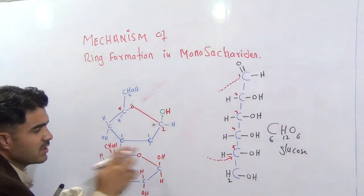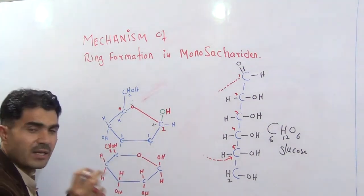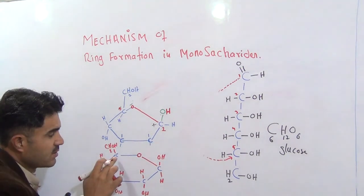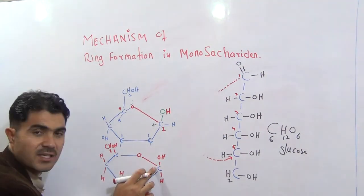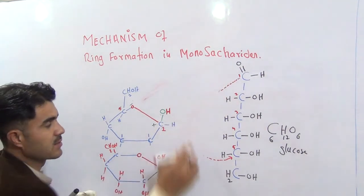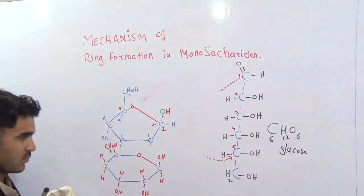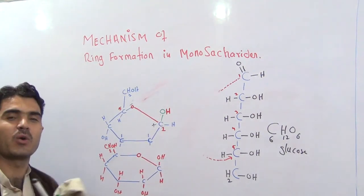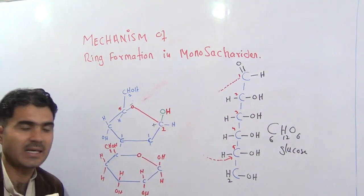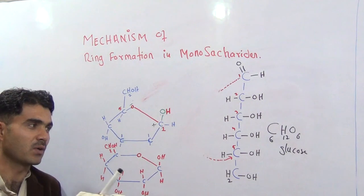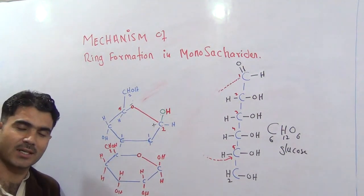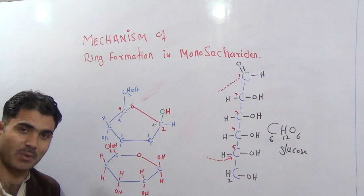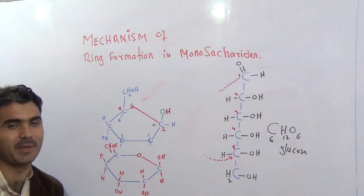Everything else in the structure will be the same. What has changed is that the C5-OH and the C1 double bond O have been disturbed to form the new bond. This is what we call the ring form. I hope you understand the ring formation — how glucose becomes a ring form from the open structure. Thank you. See you. Bye-bye.